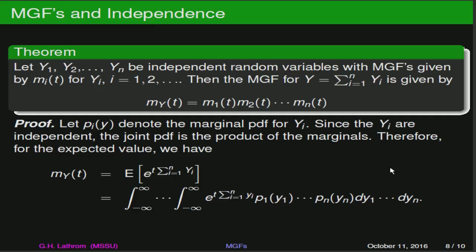Another theorem involves what happens when we've got a series of independent random variables with their moment-generating functions. These kinds of topics will come up repeatedly when we're talking about independent random variables and doing samplings. So if we've got y sub 1, y sub 2, all the way up to y sub n as independent random variables, and each y sub i has a moment-generating function m sub i of t, then for the new random variable y that's the sum of the y sub i's, the moment-generating function for y is given by the product of the moment-generating functions for each of the y sub i's.